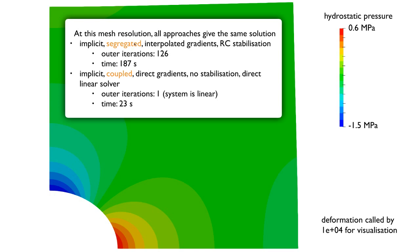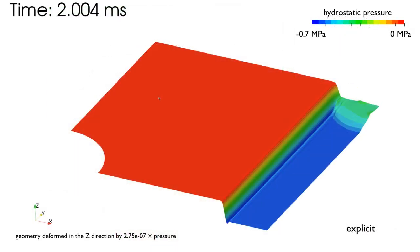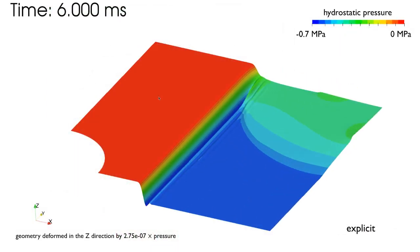But if I just compare the number of iterations and the speed, if you look at the implicit segregated, it took 187 seconds, whereas the coupled was much faster, 22 seconds for this 2D case. The coupled doesn't do any iterations, whereas the segregated required 126 iterations. In this case, for the coupled, I use a direct solver, which might explain why it's much faster. For small systems, you can use something like Gaussian elimination or an LU decomposition to solve the system, which is much faster.